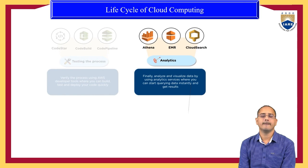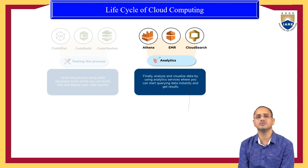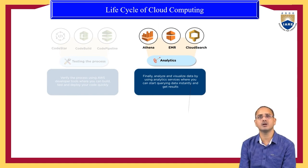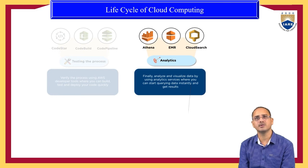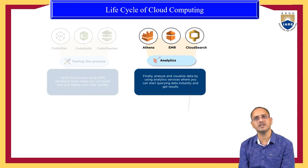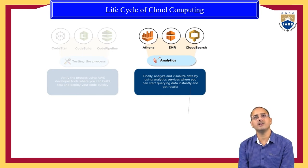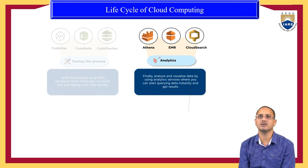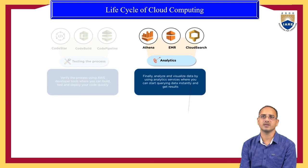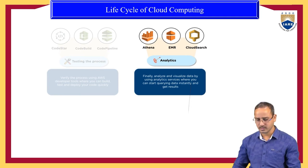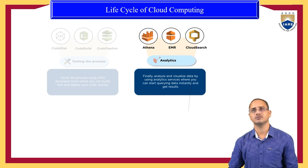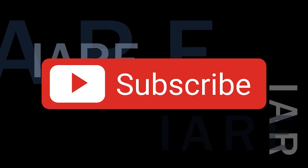These are the different steps in the life cycle of cloud computing: defining the purpose, hardware, storage, network, security, management processes and tools, testing, and analytics — nearly eight to nine different steps in total. This is about the life cycle of cloud computing. Thank you so much — like, share, and subscribe, and hit the bell icon for more updates.